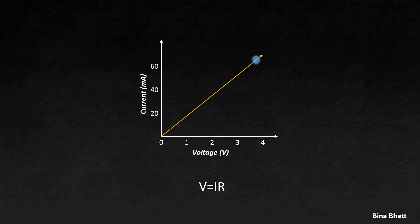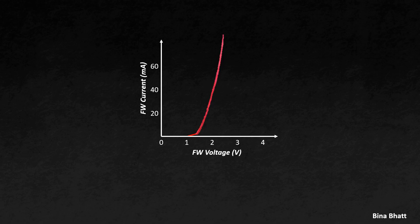Now let's have a look at the IV characteristics of an LED — we'll consider the red LED for this entire discussion. Notice how the current remains minimal until a specific voltage value, but beyond this point, even a slight increase in voltage triggers a drastic surge in the current. Thus, it's an exponential or non-ohmic relationship.